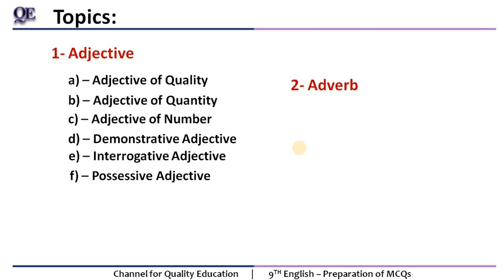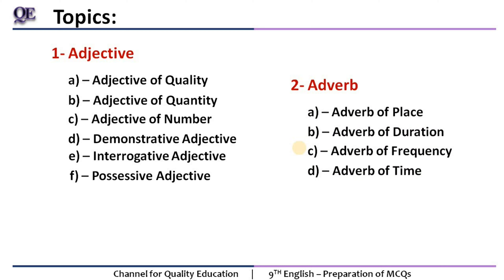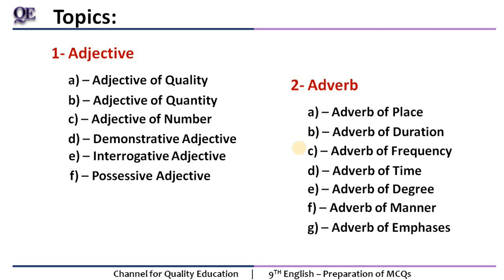The second topic is adverb. We will cover adverb of place, adverb of duration, frequency, time, adverb of degree, adverb of manner, and adverb of emphasis — seven kinds of adverbs in total. Remembering so many kinds is difficult, but if you read them in a differential way — understanding the difference between each — that is the best way to retain the information. I have taken some questions from past papers to discuss with you.